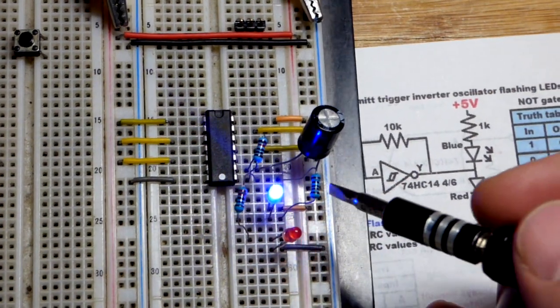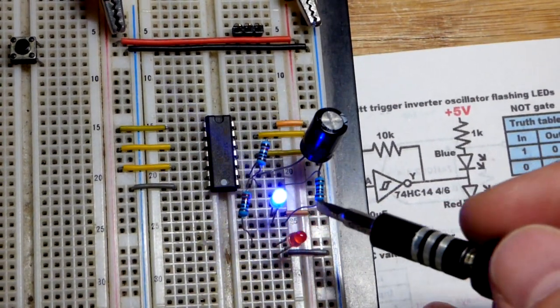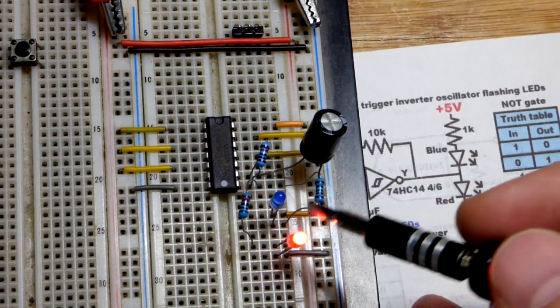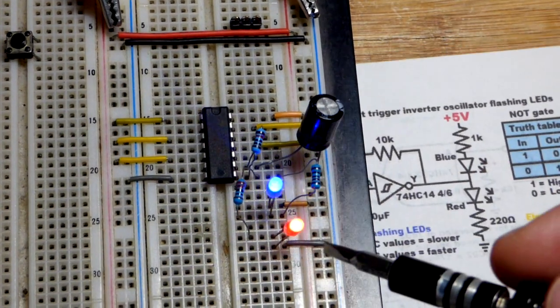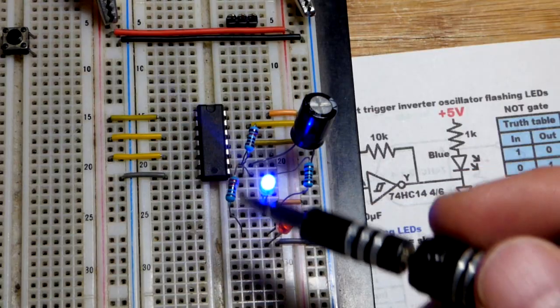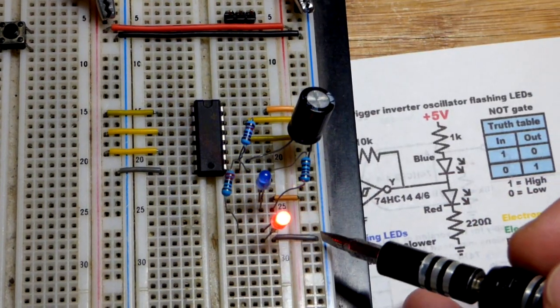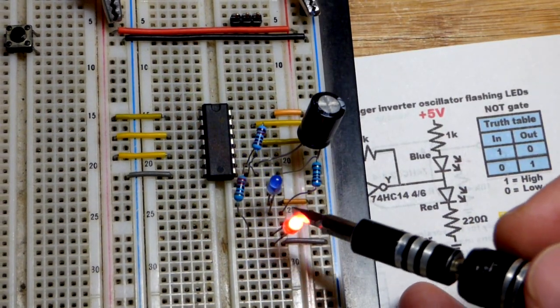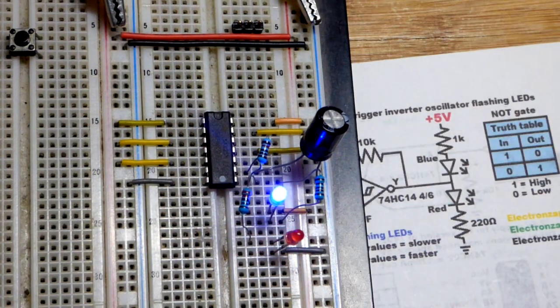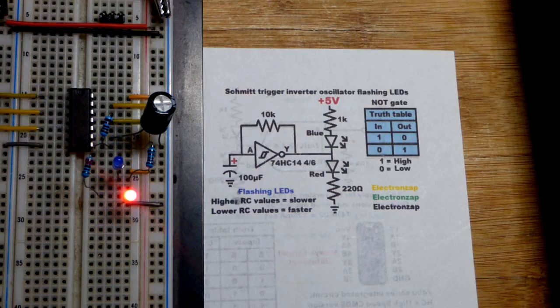The blue LED, we have the anode to the positive supply, so it lights up when the output's low. We can see when the capacitor is discharging. Then the red LED, the cathode's headed to ground, it lights up when the output is high, which is when the capacitor is charging.